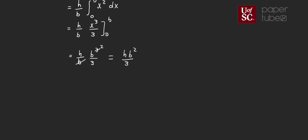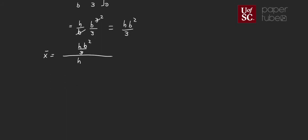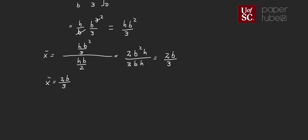That simplifies to H·b²/3. So we have the numerator H·b²/3 and the denominator H·b/2. Therefore, X̄ equals (H·b²/3) divided by (H·b/2), which gives 2b²·H divided by 3·b·H, simplifying to X̄ = 2b/3.